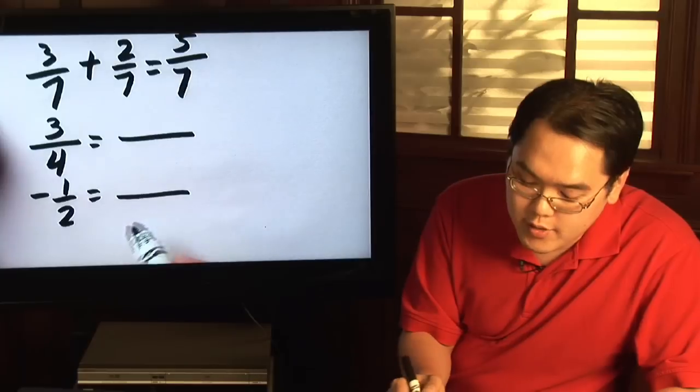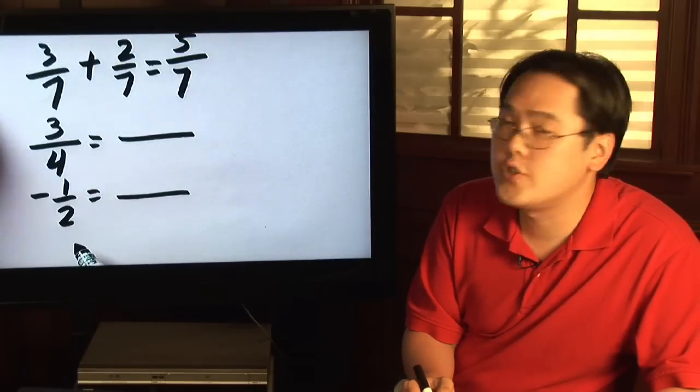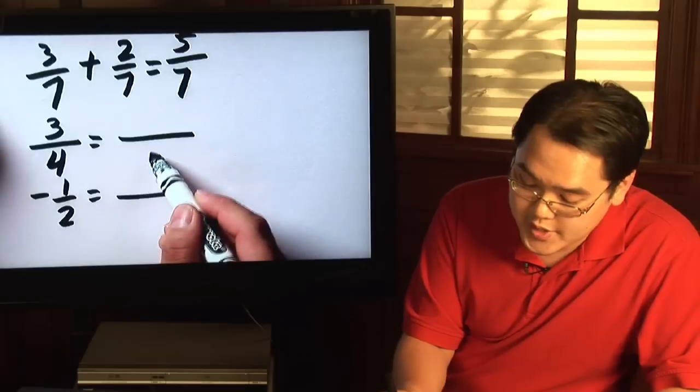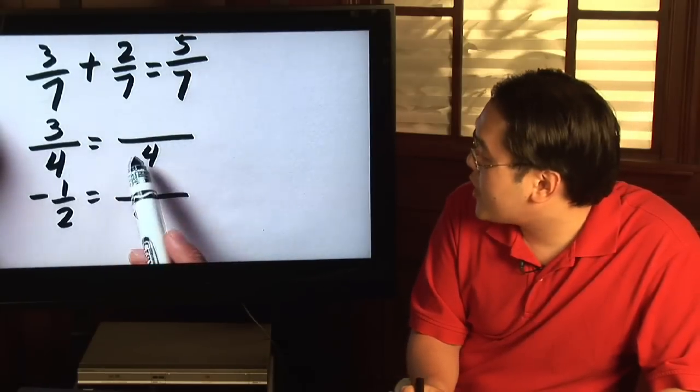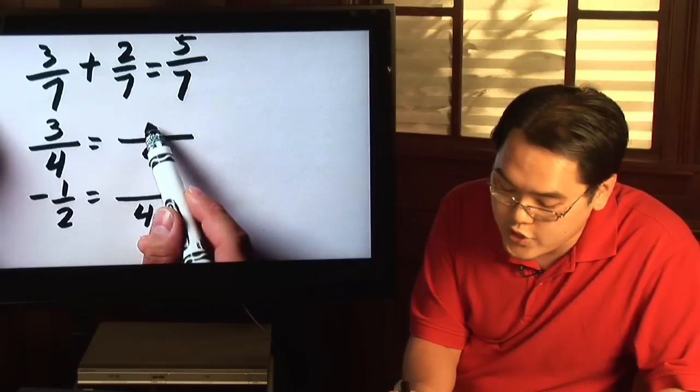All you need to do is think about what number will both four and two go into, and that number is four. Since the denominator here didn't change, the numerator here wouldn't change either.